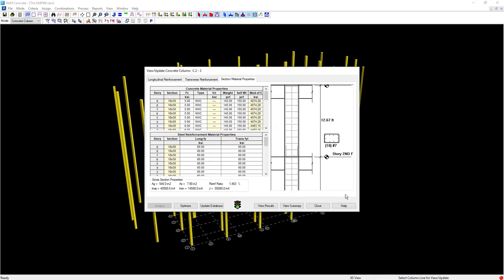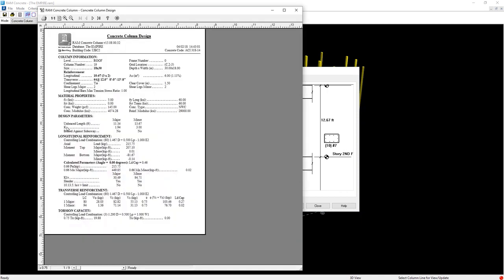The design report of the column at any storey can be viewed. Included is the value of KL over R. Since it is greater than 22, ACI requires that we account for the slenderness effects, which we did.